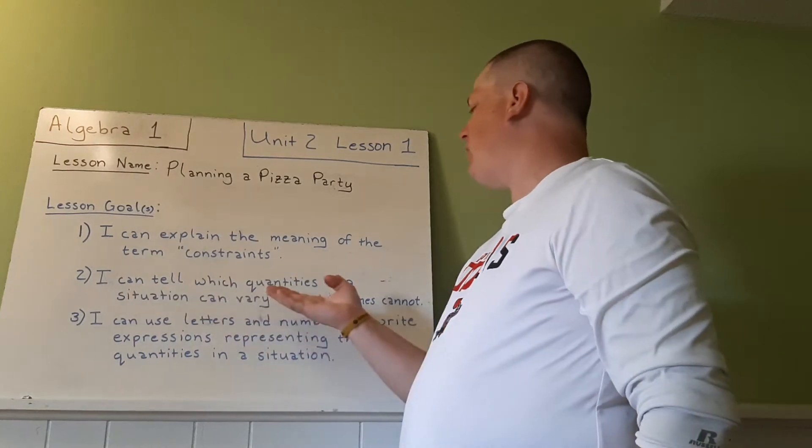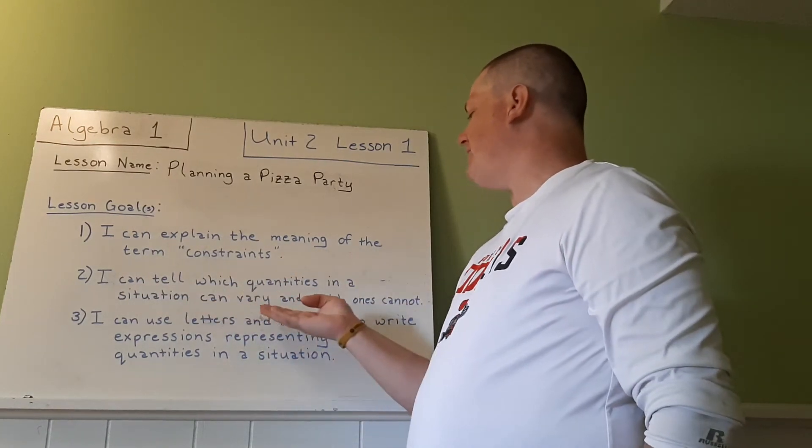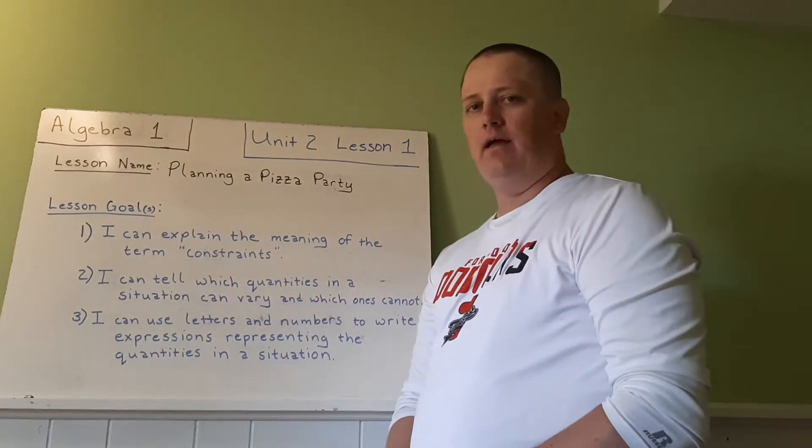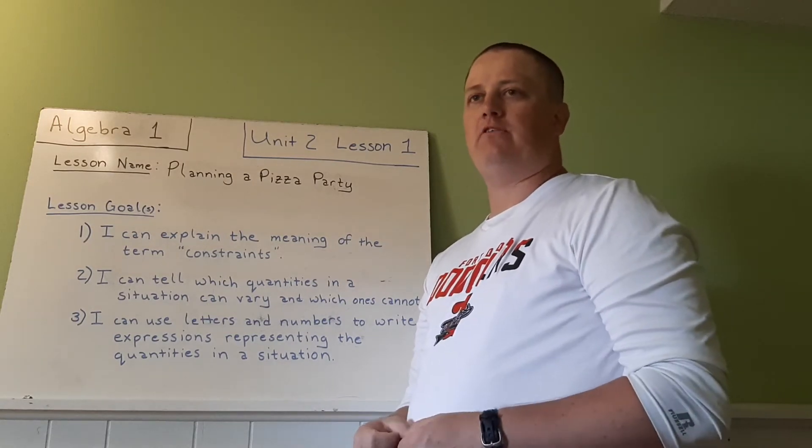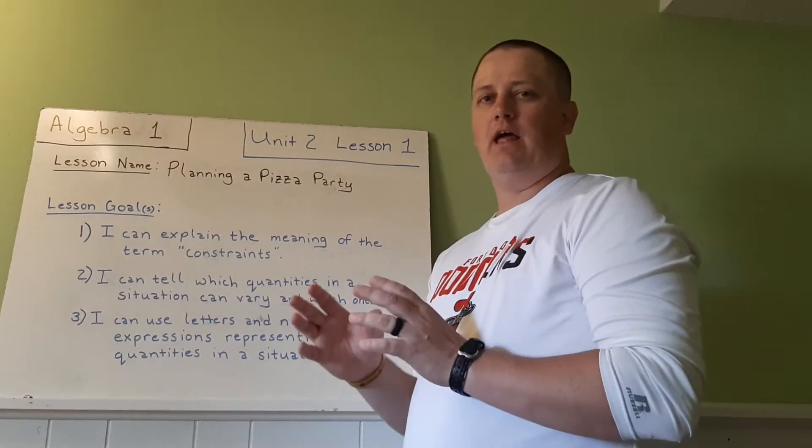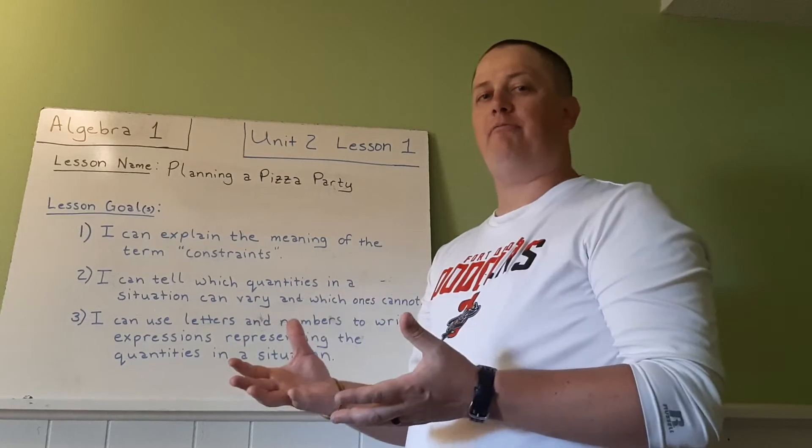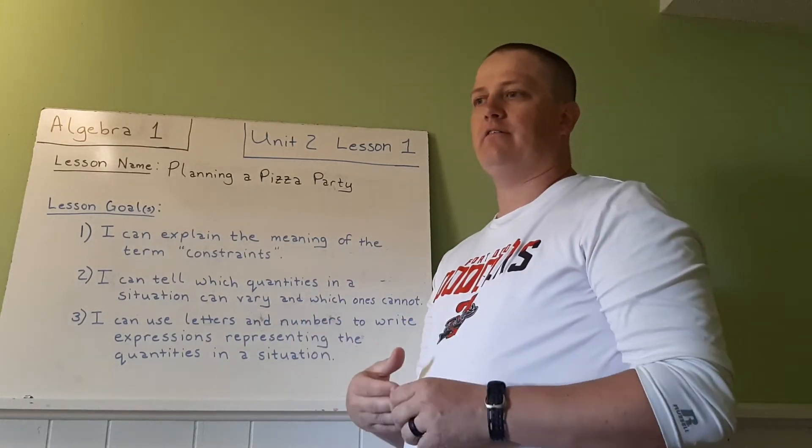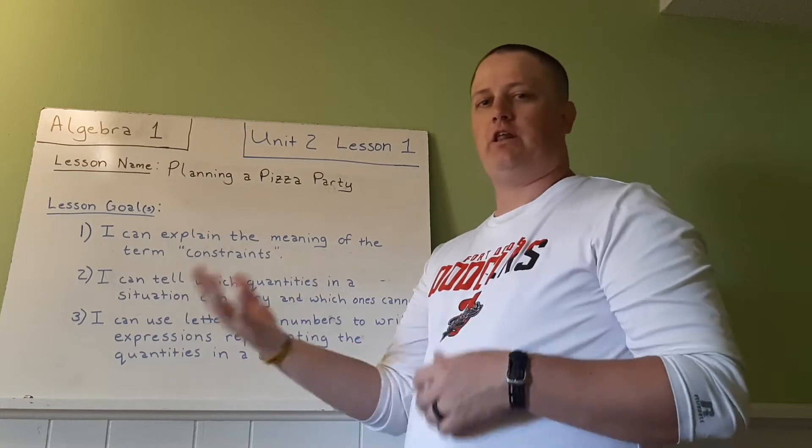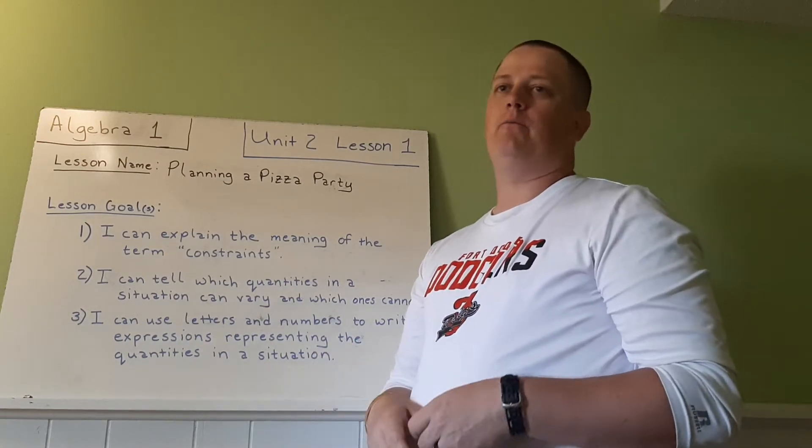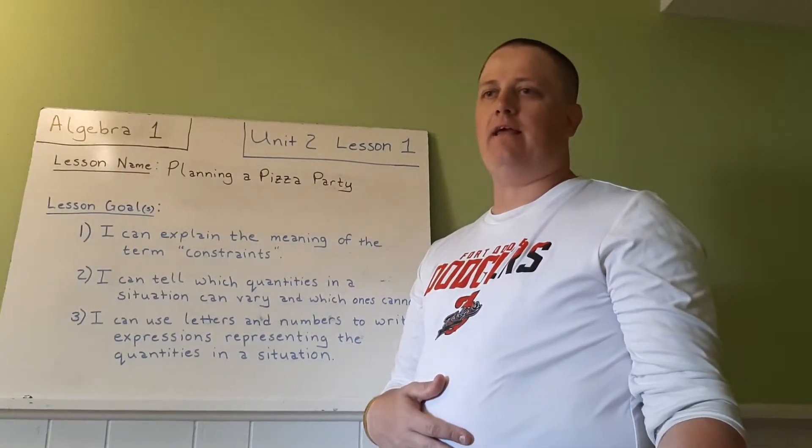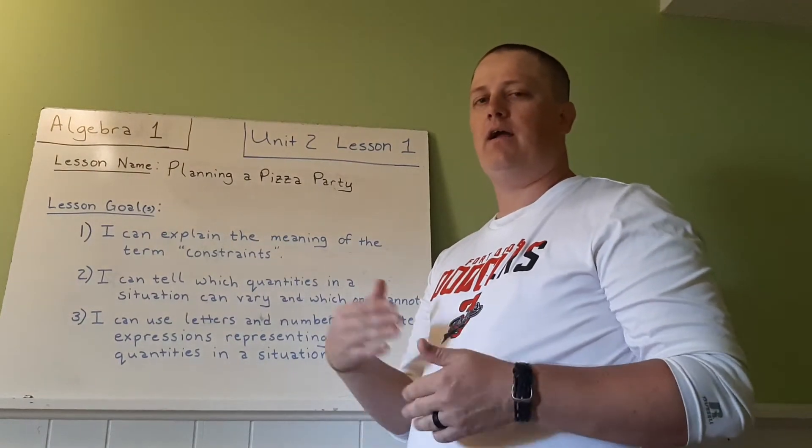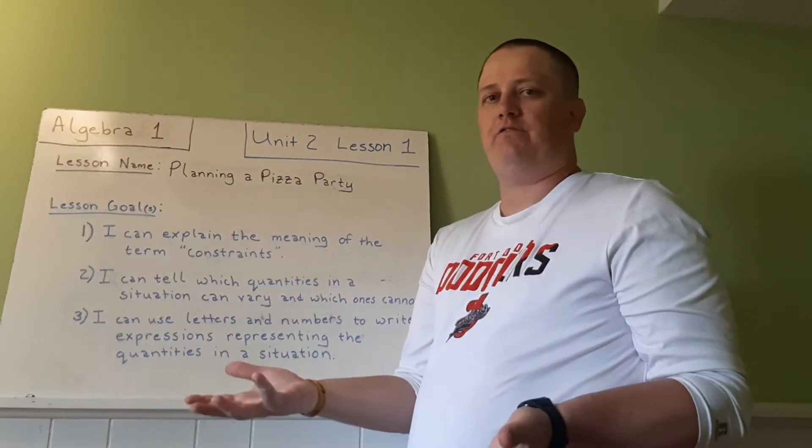Second, I can tell which quantities in a situation can vary and which ones cannot. In most situations, there may be certain things that are stuck, like there's always going to be five players on a basketball court. And then there's other things that can maybe vary. When I took this test, I got a 90, but when I took this test, I got an 85. So those things can vary, but in basketball, there's always five players.